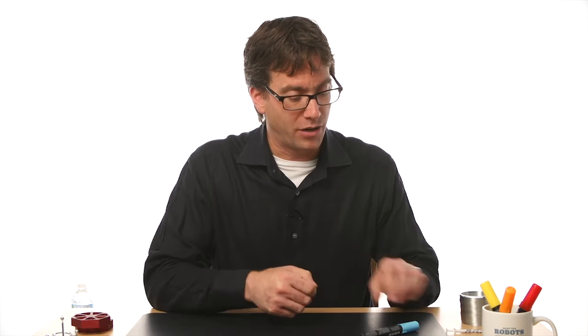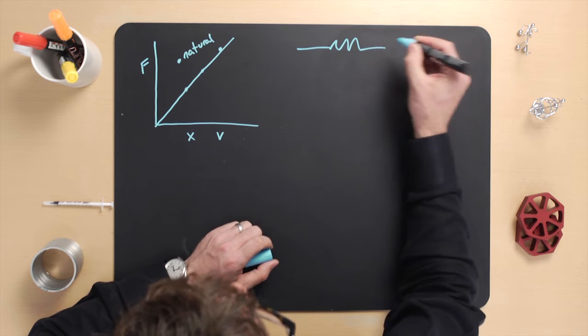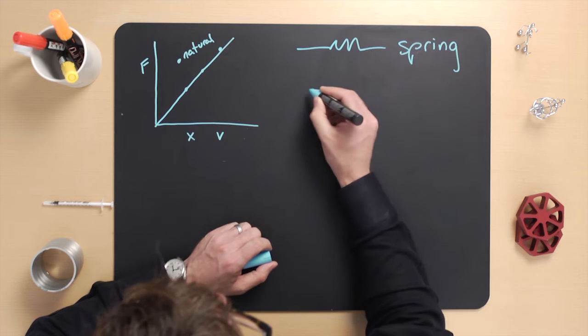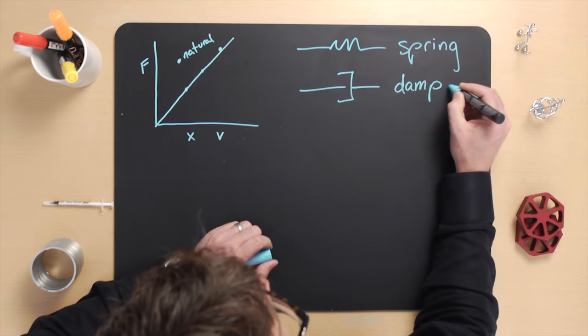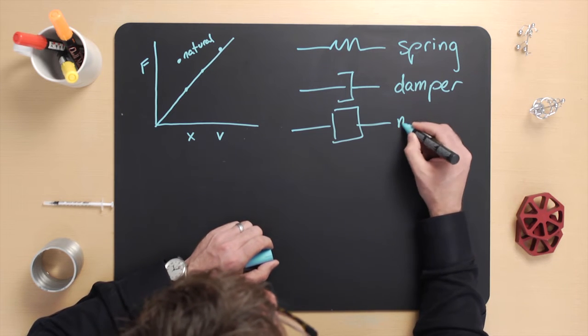Mechanical diagrams play a critical role in how we set up models of mechanical systems. In this class, we are going to always assume that we have three types of components: springs, dampers, and masses. We will always use these three symbols to represent the three types of idealized components. First, we have a spring. Second, we have a damper. And lastly, we have mass.